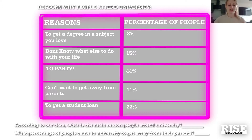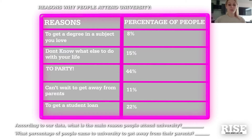Our reasons are: to get a degree in the subject you love — 8%; didn't know what else to do with their life — 15%; to party — 44%, which is quite high; can't wait to get away from their parents — 11%; and to get a student loan — 22%.